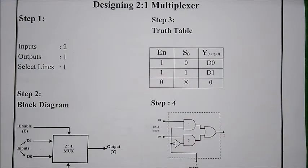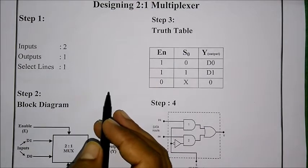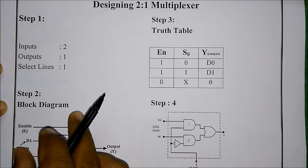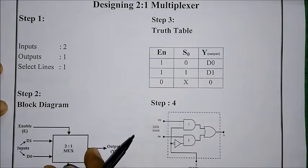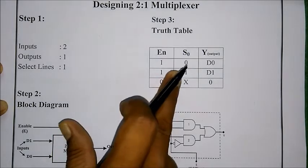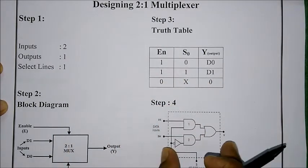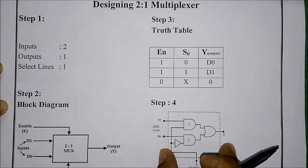Now let us see how to design the 2-to-1 multiplexer step by step. For a combinational circuit design, we first need to identify the inputs and outputs, then assign variables to the given multiplexer and draw a block diagram. From that we get the truth table, and finally we draw the logic diagram.